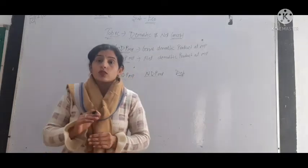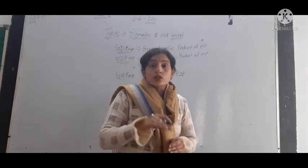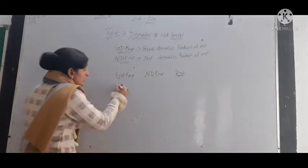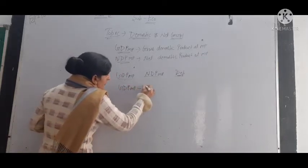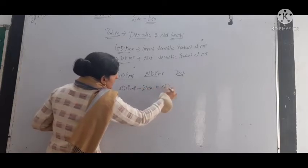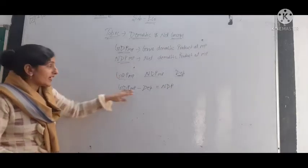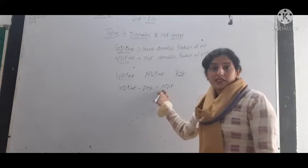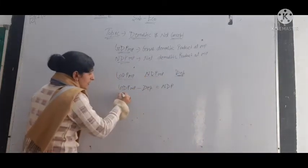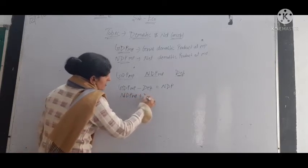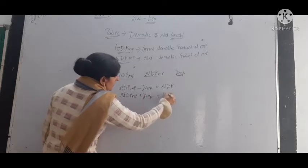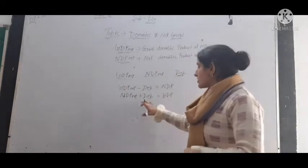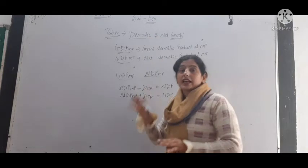So when we exclude depreciation from GDP, then we have NDP. The formula is: GDP minus depreciation equals NDP. We can also express it as: NDP plus depreciation equals GDP. So when we add depreciation to the Net Domestic Product, we get GDP. This is the key difference between the domestic and net concept.